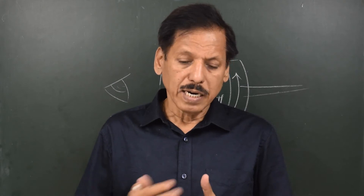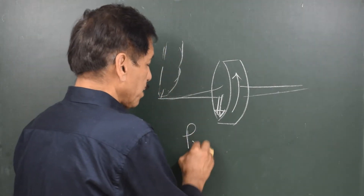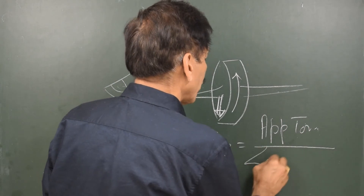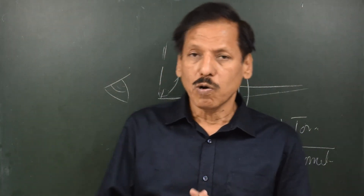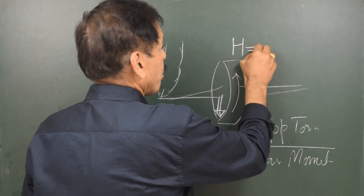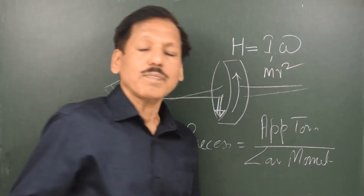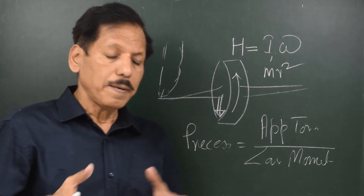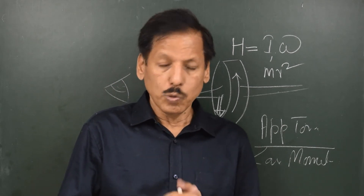Let us bring our attention back to precession itself. Formula-wise, the rate of precession is equal to applied torque divided by angular momentum. Angular momentum is a very important property of a rotating object — it is actually moment of inertia times angular velocity. That means angular momentum H equals I·omega, where I is the moment of inertia and can be represented as m·r², where m is mass and r is the radius of gyration. So if you want good angular momentum, you must have a substantially large mass and radius.